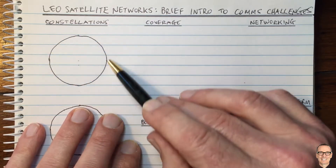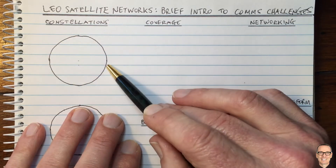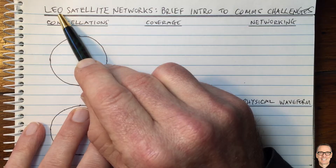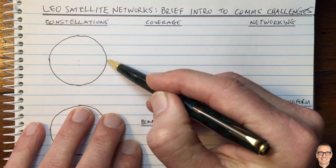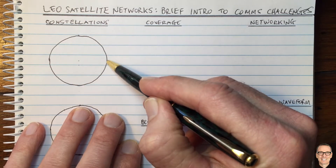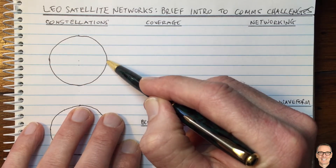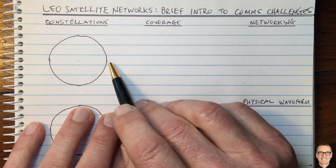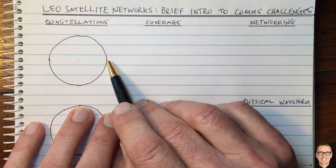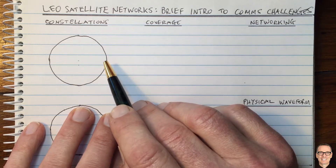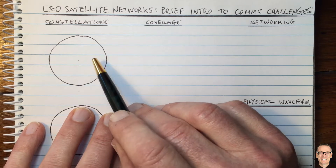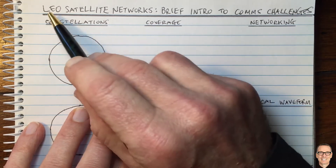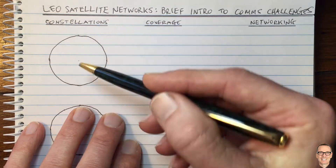Here's a picture of the Earth. The first thing to know about LEO satellites is that they fly around the Earth at a much faster rate than the Earth is spinning. This is different from geostationary satellites which stay over a fixed point of the Earth and rotate with the Earth.